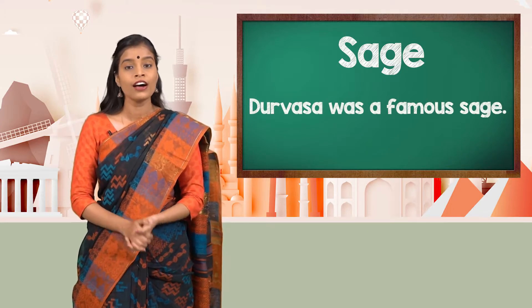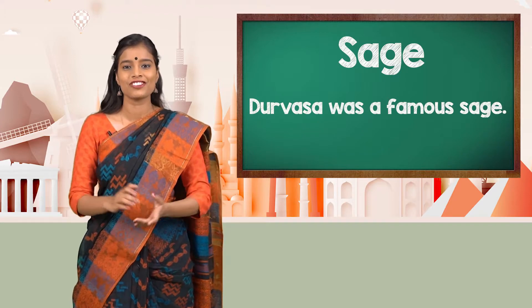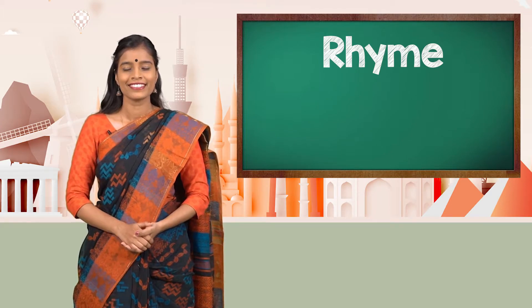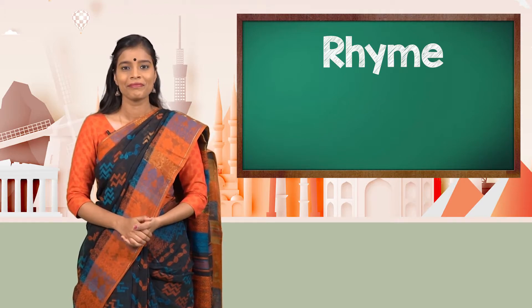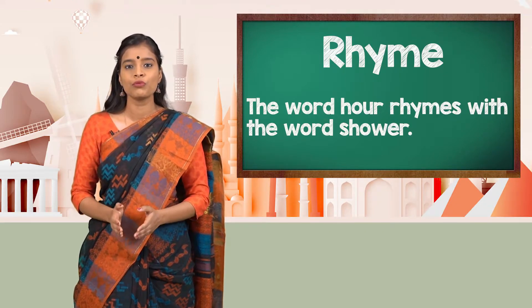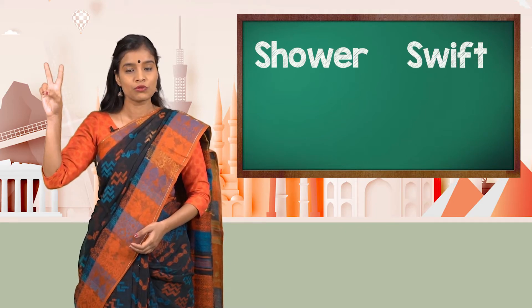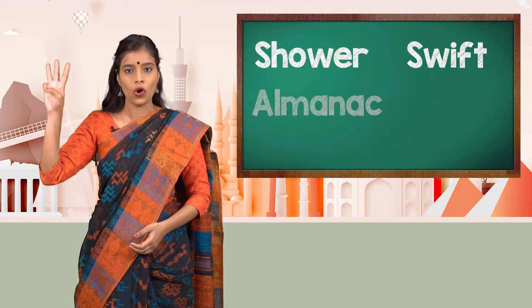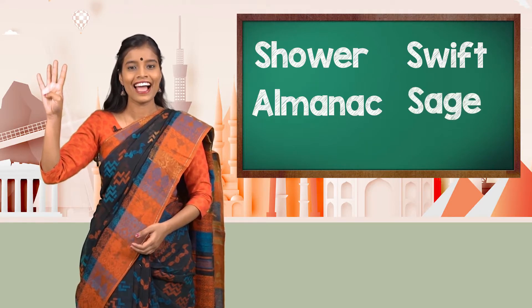Durvasa was a famous sage. The word rhyme — let's look at that. The word 'hour' rhymes with the word 'shower'. So children, today we learnt five new words. Let's revise them: Shower, Swift, Almanac, Sage, and Rhyme.